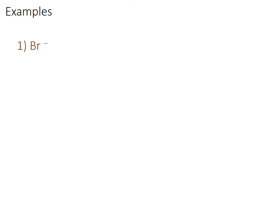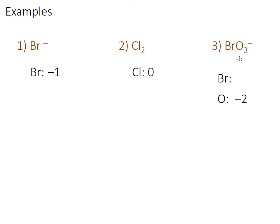Our examples. Br⁻: it's got a negative one charge, so the oxidation number must be negative one. Cl₂: it's a diatomic, and we said diatomics in the diatomic state have an oxidation number of zero. Example three, BrO₃ with a minus one charge: I've got Br and O. We always try oxygen with a minus two charge. Three oxygens gives me a minus six. We know it all has to add up to a minus one charge in the end, so that means Br has to have a plus five. I checked the pink sheet, and Br can take a plus five charge — so Br's oxidation number is plus five.